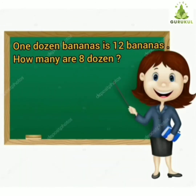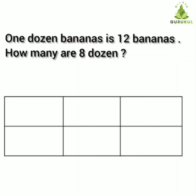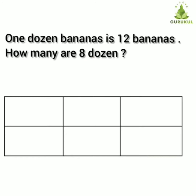First of all, read out this example. One dozen bananas is 12 bananas. How many are 8 dozen? One dozen bananas means 12 bananas. So how many bananas will be there in 8 dozen? To find out, we must multiply 12 by 8. First, expand the number. 12 is equal to 10 plus 2. 8 will remain the same as 8 units.